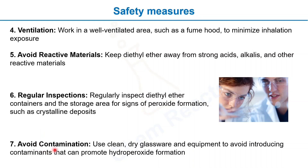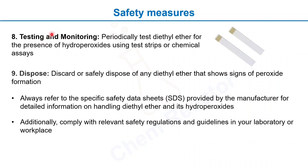The seventh measure is avoid contamination — always use clean and dry glassware or equipment to avoid introducing contaminants into your diethyl ether bottles. The eighth safety measure is testing and monitoring — periodically test ether for the presence of hydroperoxides using peroxide test strips, which are easily available on the market. The ninth safety measure is disposal — always discard diethyl ether bottles that show any signs of peroxide formation.